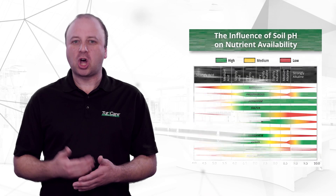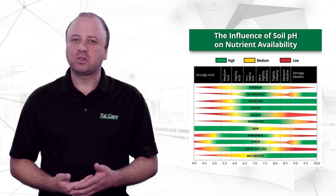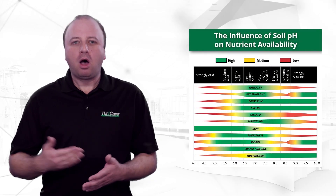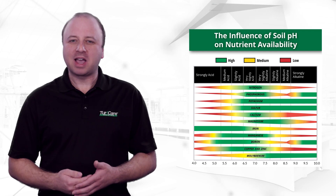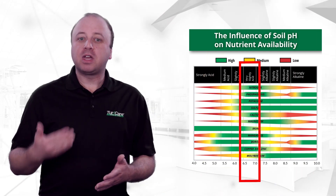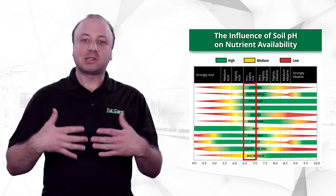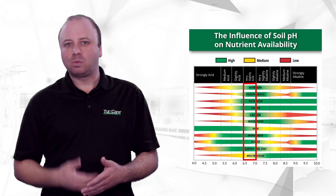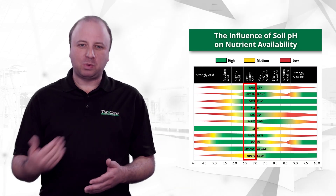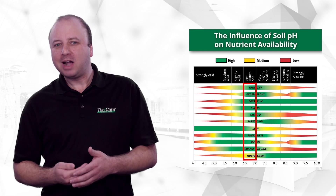Take a look at the chart entitled "The Influence of Soil pH on Nutrient Availability." From nitrogen, phosphorus, and potassium, all the way through the secondary and micronutrients, note that nutrient availability for the majority of nutrients is maximized when the pH is between 6.5 and 7.